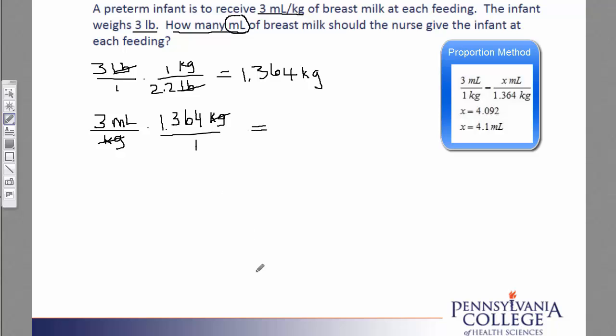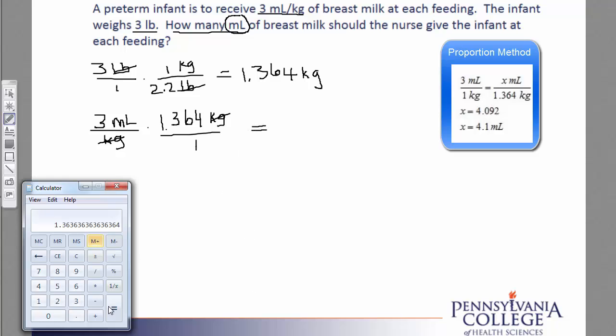And again, we'll type that in our calculator. So 3 times 1.364 gives us 4.092 as an answer. When we look at this answer, we're going to round it off to the nearest tenth because it is milliliters greater than 1 milliliter. And so rounding to the nearest tenths, we'll round this to 4.1 milliliters.